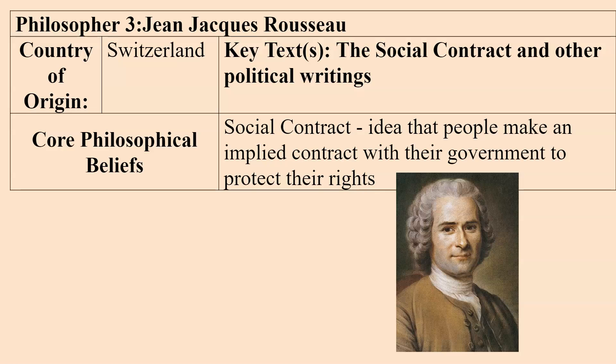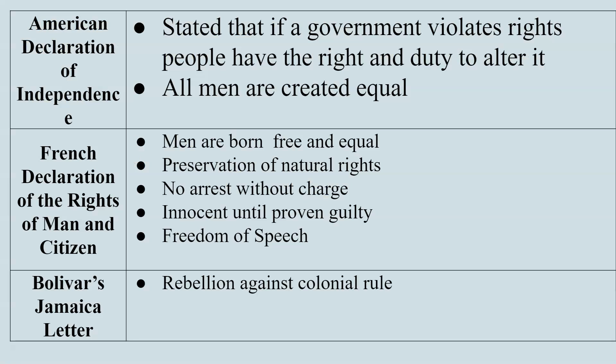Jean-Jacques Rousseau is one we don't know as well, but he's a favorite to come up on the test. It's because of his idea called the social contract. He builds off of and complements Locke's ideas with the concept that people make an implied contract with their government to protect their rights — we agree to give up certain freedoms in exchange for safety and security.